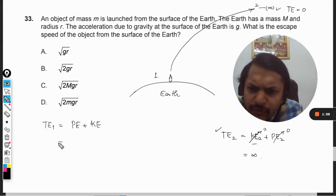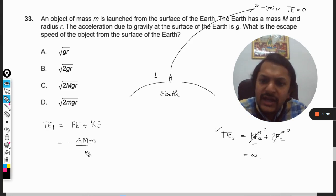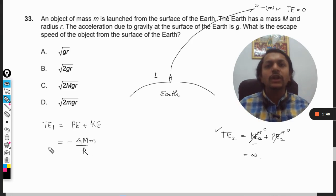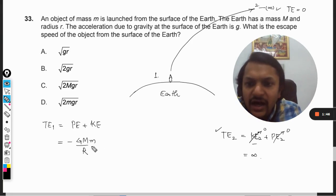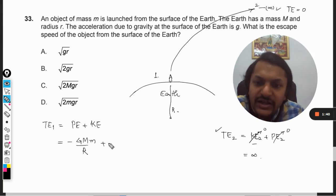So what is total energy? Total energy at position 1 will be the sum total of potential energy plus kinetic energy. We know that the potential energy is minus GMm by capital R, where capital M is the mass of Earth and small m is the mass of the body, and R is the distance from the center of the Earth.